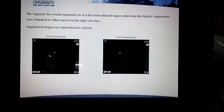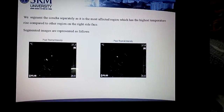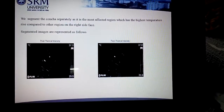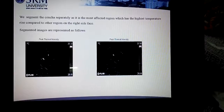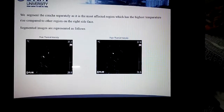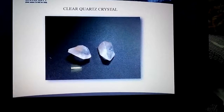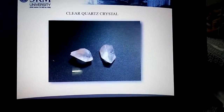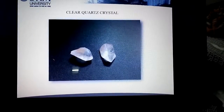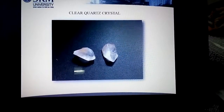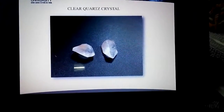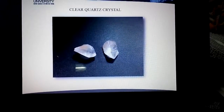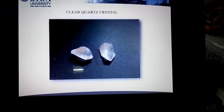These images are the segmented images. We segment the concha region separately as it is the most affected region, having the highest temperature rise compared to other regions on the right side of the face. In order to reduce the electromagnetic and thermal effects, we use clear quartz crystal, which has the capability of absorbing electromagnetic radiation. These crystals are placed near the antenna to absorb the electromagnetic radiation emitted from the mobile phone.